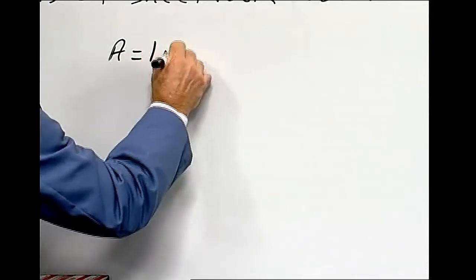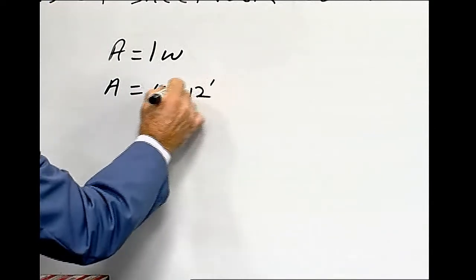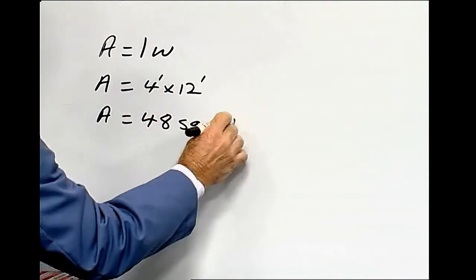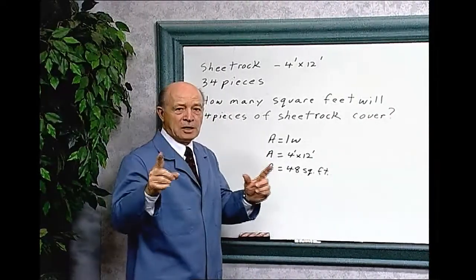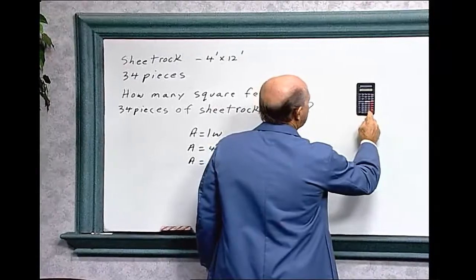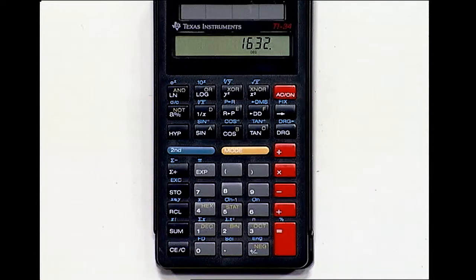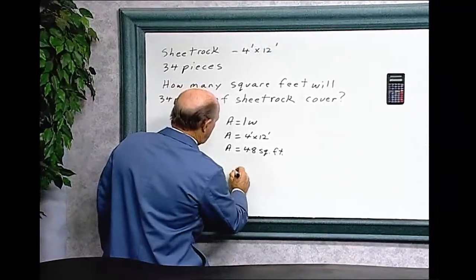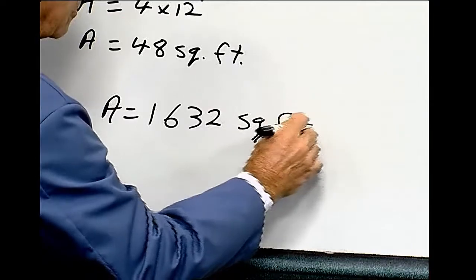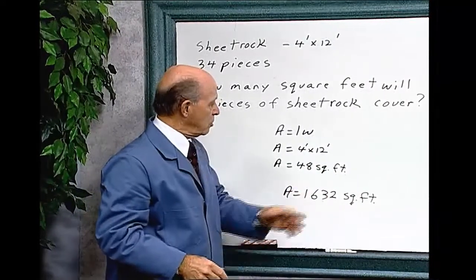A equals L times W, length times the width. Area equals 4 times 12 feet. So area equals 48 square feet, and that's one piece. We have to multiply 48 by 34. So 34 times 48 equals 1,632. The area it will cover is 1,632 square feet. That bundle of sheetrock will cover 1,632 square feet.